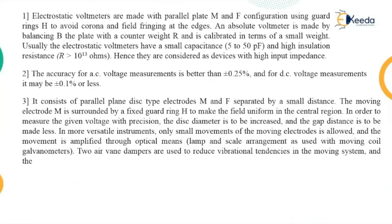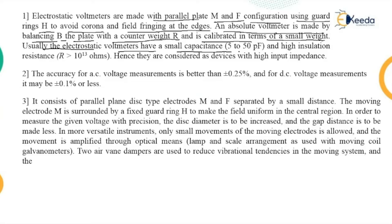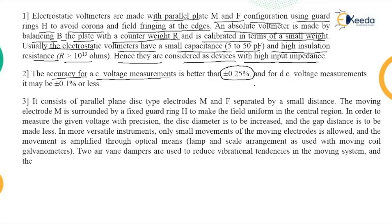Electrostatic voltmeters are made with a parallel plate M and F configuration using a guard ring H, to avoid corona and field fringing at the edges. An absolute voltmeter is made by balancing the plate with a counterweight R and is calibrated in terms of small weights. Generally, electrostatic voltmeters have a small capacitance of 5 to 50 picofarads and a high insulation resistance greater than 10 to the power 13 ohms, making them devices with high input impedance. The accuracy for AC voltage measurement is ±0.25% and for DC measurement it is ±0.1% or even less.